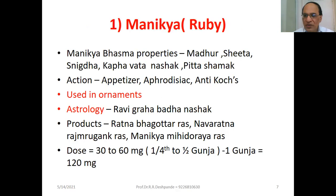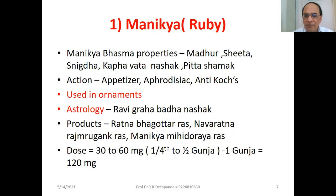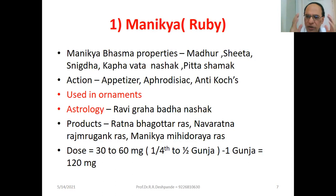Manikya (Ruby). Manikya Bhasma properties are Madhur and very cooling — Sheet, Snigdha. It is Kapha-Vata-Nashak and Pitta-Shamak, cooling down the heat of Pitta. Manikya can be appetizer, aphrodisiac, sex tonic, anti-cough, and anti-tuberculosis. It is used in ornaments. Astrologically, it is Ravi-Graha-Badha-Nashaka — whenever there is a problem about Surya-Graha in your astrological chart, the astrologer advises using ruby in a gold ring. Products include Ratna-Bhagotra-Rasa, Navaratna-Raja-Murghanta-Rasa, and Manikya-Mihidhorya-Rasa. These products are very rarely available, but students must remember this theoretical information for examination.